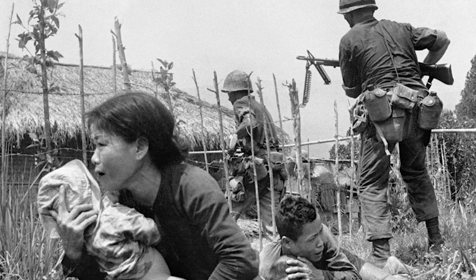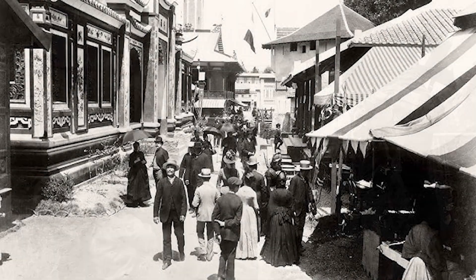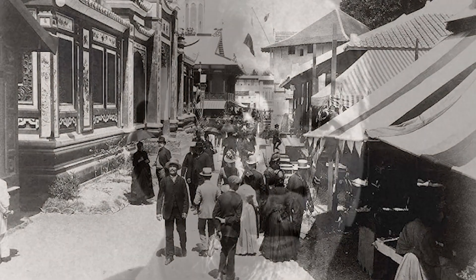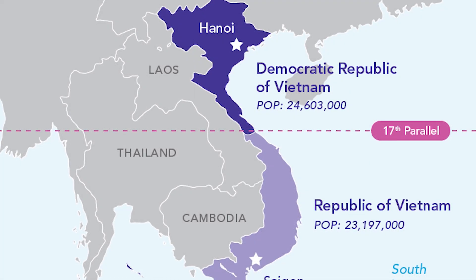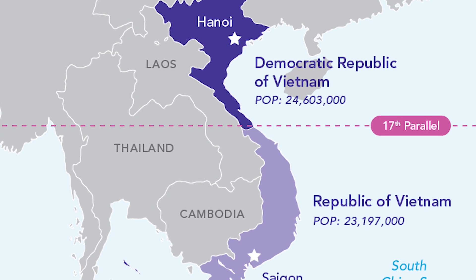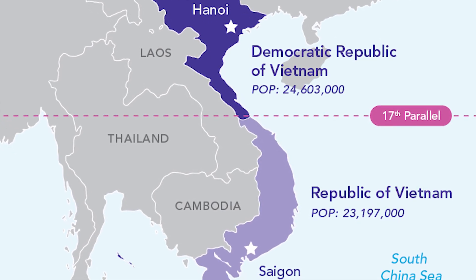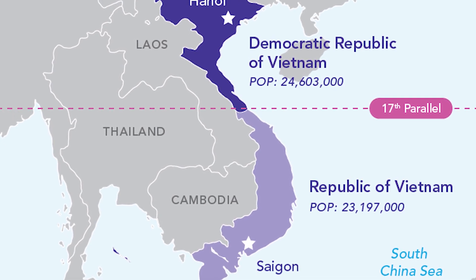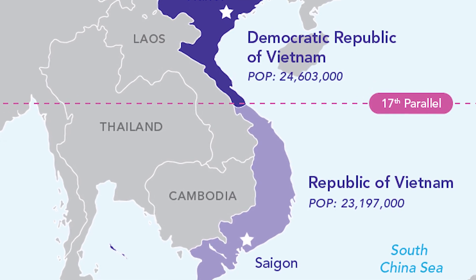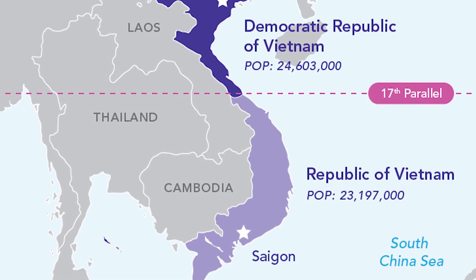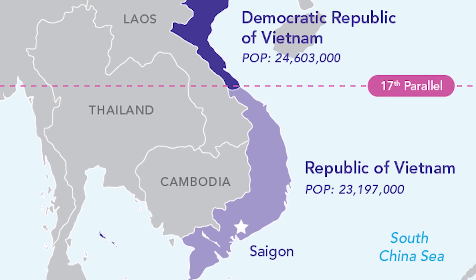The conflict began in the 1950s, when the French, who had colonized Vietnam, were defeated by the communist-led Viet Minh in the First Indochina War. After the French withdrawal, Vietnam was divided into two countries — North and South — with the North under the control of the communist-led Democratic Republic of Vietnam (DRV), and the South under the control of the US-backed Republic of Vietnam (RVN).